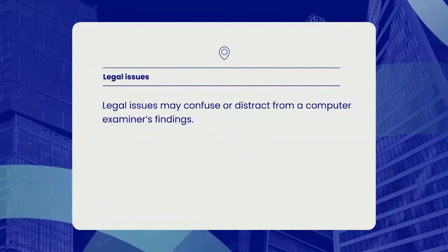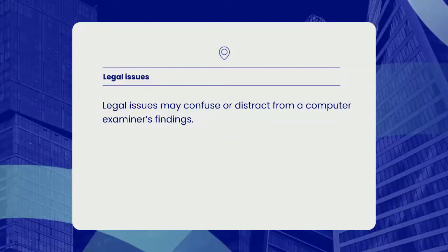Now we'll discuss legal issues. Legal issues may confuse or distract from a computer examiner's findings. An example is the Trojan defense. A Trojan is a piece of computer code disguised as something benign but which carries a hidden and malicious purpose. A lawyer may argue that actions on a computer were not carried out by the user but were automated by a Trojan without the user's knowledge. Such a Trojan defense has been successfully used even when no trace of a Trojan or other malicious code was found on the suspect's computer.